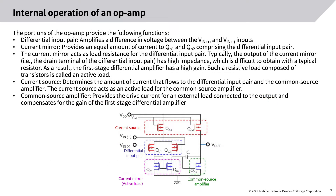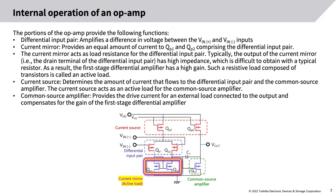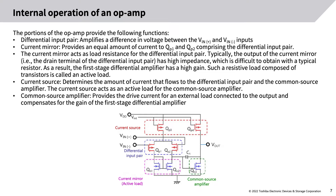The portions of the op amp provide the following functions. The differential input pair amplifies a difference in voltage between the VIN+ and VIN- inputs. The current mirror provides an equal amount of current to QP1 and QP2 comprising the differential input pair, and acts as a load resistance for it. Typically, the output of the current mirror has high impedance, which is difficult to obtain with a typical resistor. As a result, the first-stage differential amplifier has a high gain. Such a resistive load composed of transistors is called an active load. The current source determines the amount of current that flows to the differential input pair and the common source amplifier, and acts as an active load for the common source amplifier. The common source amplifier provides drive current for an external load connected to the output and compensates for the gain of the first-stage differential amplifier.